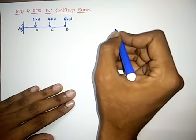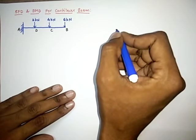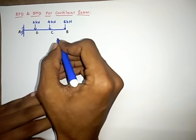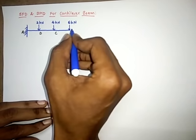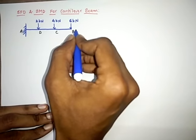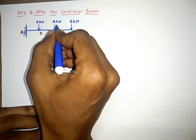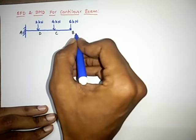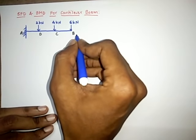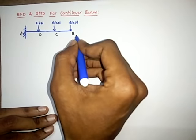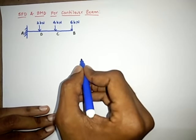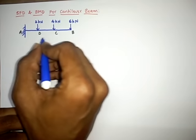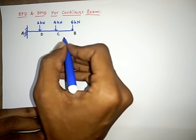We are looking at the shear force and bending moment diagram for a cantilever beam. A cantilever beam is given with three point loads: 6 kN, 4 kN, and 2 kN acting at different points. To draw the shear force diagram and bending moment diagram, we first have to calculate shear forces at different points or locations on this cantilever beam.